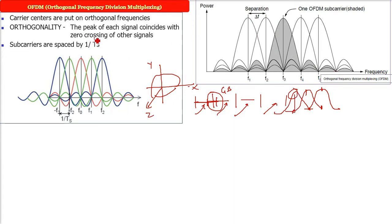So carrier centers are put on orthogonal frequencies, the sub-carriers are spaced by 1/T, that is the delta T. Frequency is 1/T. So if you see here, this is a green signal and you just see about blue and red, where are they? When the green is peaking, the red and blue, they are zero. When the red is peaking, the other two are zero.